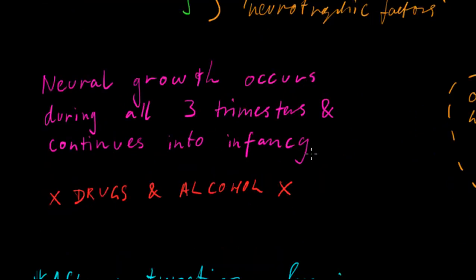Neural growth occurs during all three trimesters, continues into infancy. And obviously, as it's fairly widely known, drugs and alcohol are a big no-no.